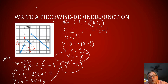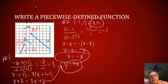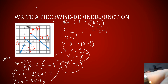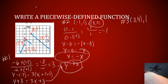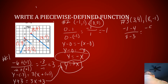Now let's work on the third piece. I have a point where X is 3 and Y is 4, and another point where X is 8 and Y is negative one. Using the slope formula: negative one minus four over eight minus three gives negative five over five, so the slope is negative one again.